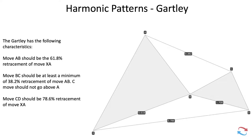two of the most popular and frequently occurring harmonic patterns. The first is the Gartley pattern. The Gartley pattern was named after and discovered by Harold McKinley Gartley, who discovered this pattern in the stock market somewhere around the 1930s. His pattern was later adapted by traders in all markets, including the forex markets. This is what the Gartley pattern looks like, and it consists of